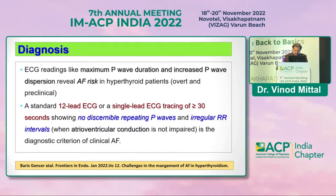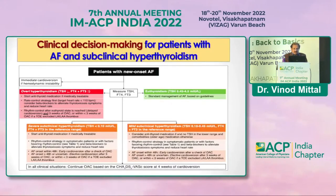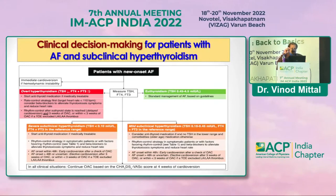Regarding treatment decisions: first and foremost, if a patient has new-onset atrial fibrillation and is hemodynamically unstable, urgent cardioversion is required — this should be very clear. Second, when a patient has overt hyperthyroidism and it is not an emergency, make the patient euthyroid by starting antithyroid medication.